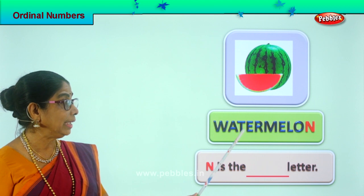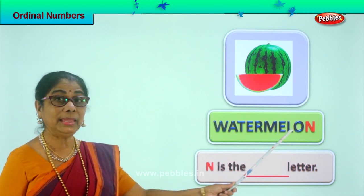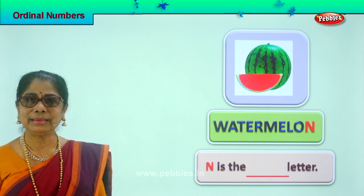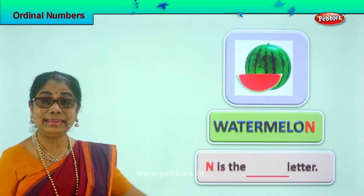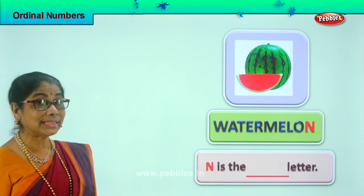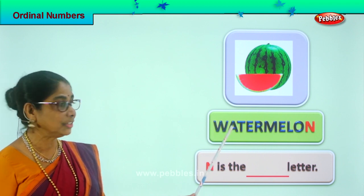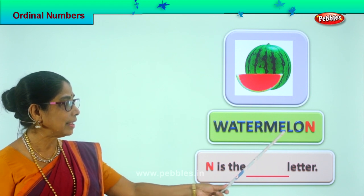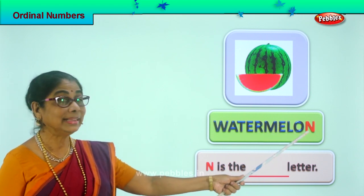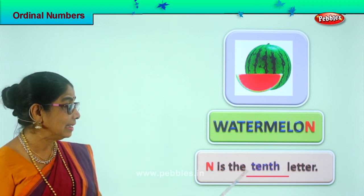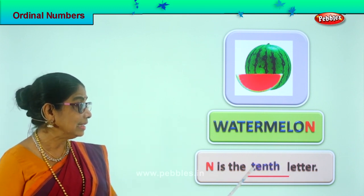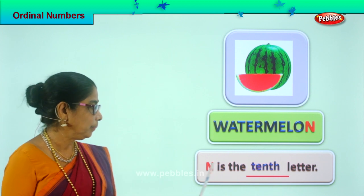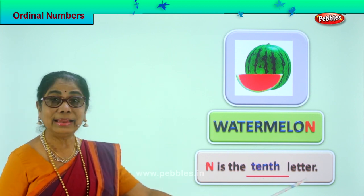Let's spell watermelon: W-A-T-E-R-M-E-L-O-N. Which is the colored letter? N. Let's look at the ordinal position — first, second, third, fourth, fifth, sixth, seventh, eighth, ninth, tenth. N is the tenth letter. Spell tenth: T-E-N-T-H. Tenth. N is the tenth letter. Did you enjoy?